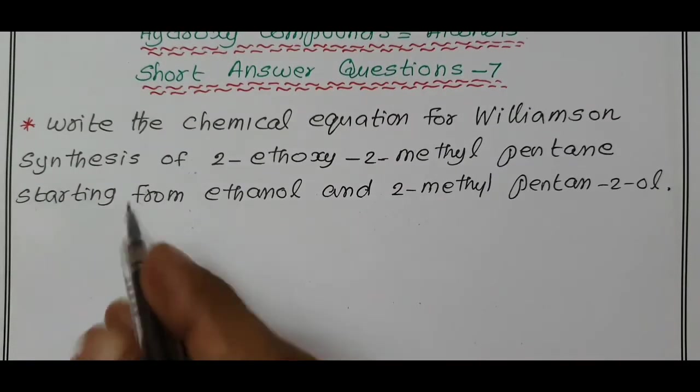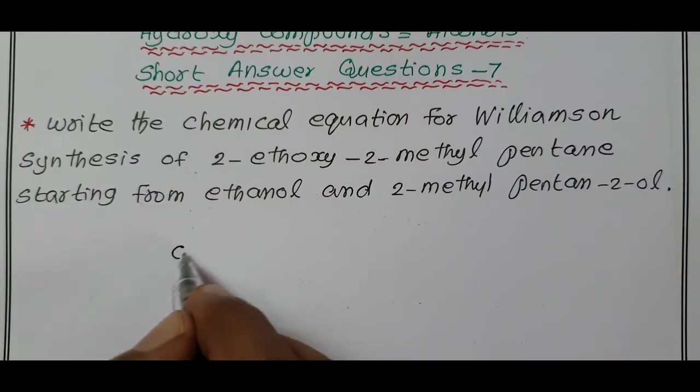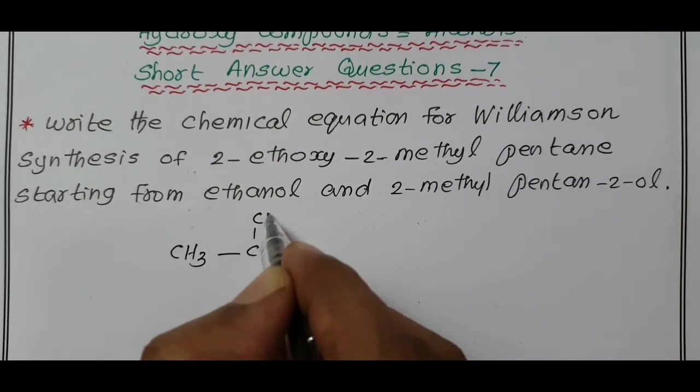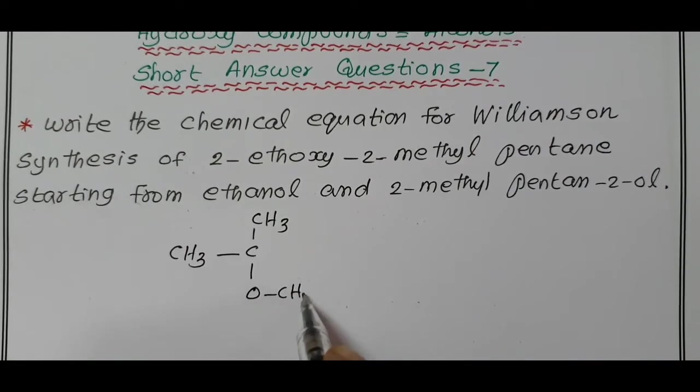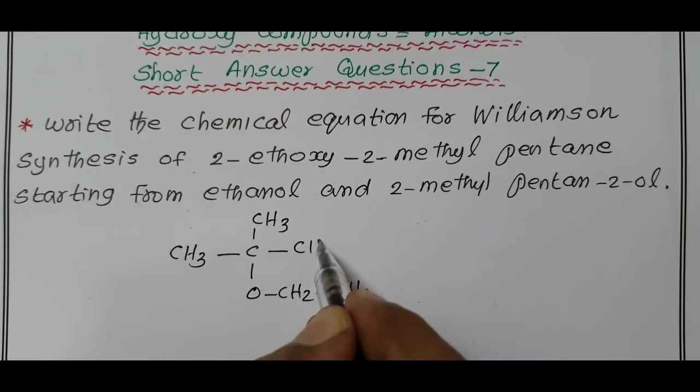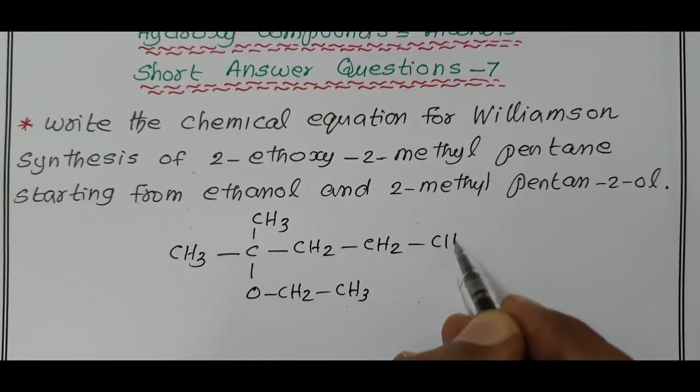5-carbon atom. So, CH3, the second carbon contain 1-methyl, the same second carbon contain 1-ethoxy, CH2-CH3. Third carbon, CH2, fourth carbon, CH2, fifth carbon, CH3.